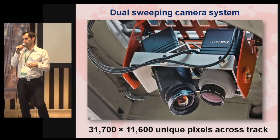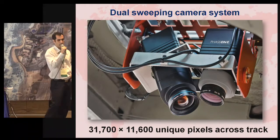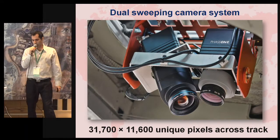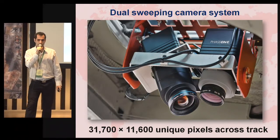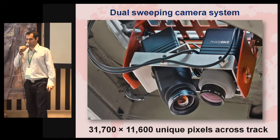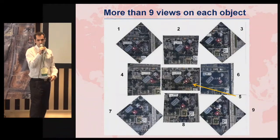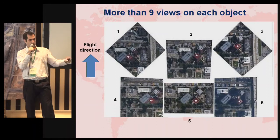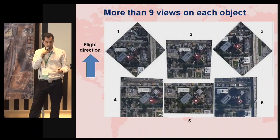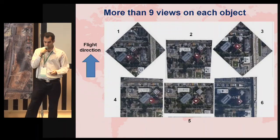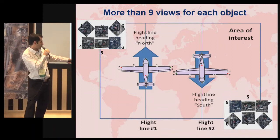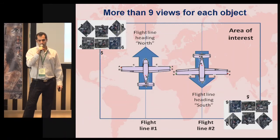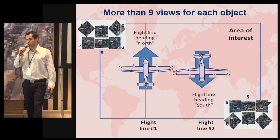We have developed a dual-camera system — two Phase One sweeping camera systems, both 100 megapixels: one looking 90 degrees nadir and one looking 45 degrees forward. This allows us to achieve a full 3D model from a single flight pass, and is patent pending in the US. We get more than nine views on each object, and because of the overlap between lines we actually see each object from 40 or 50 images, which makes a significant difference in the automatic mesh processing.